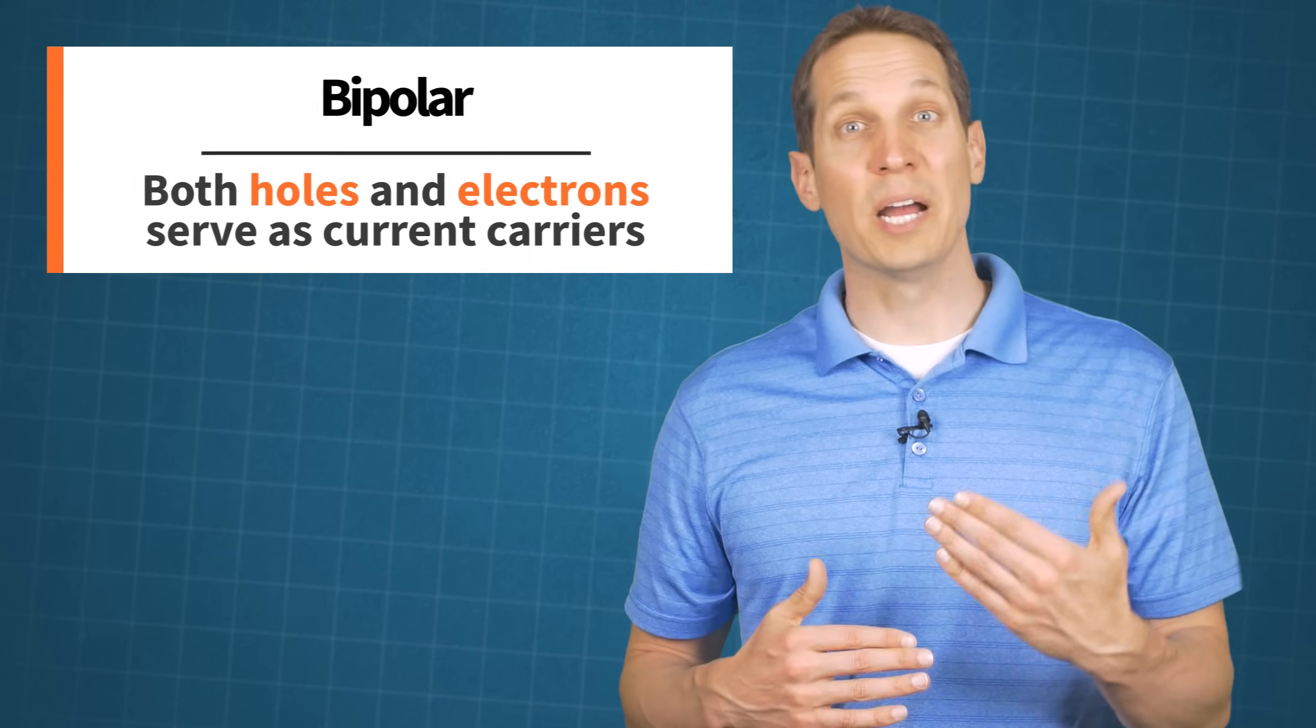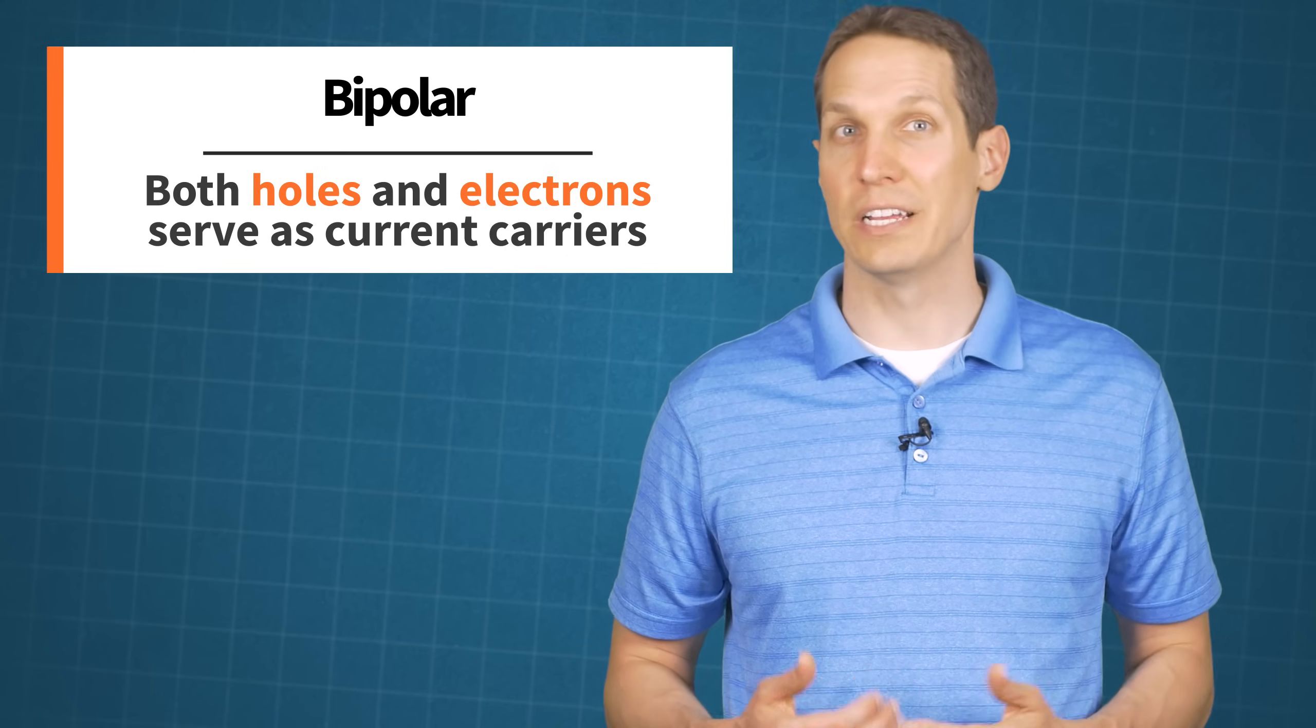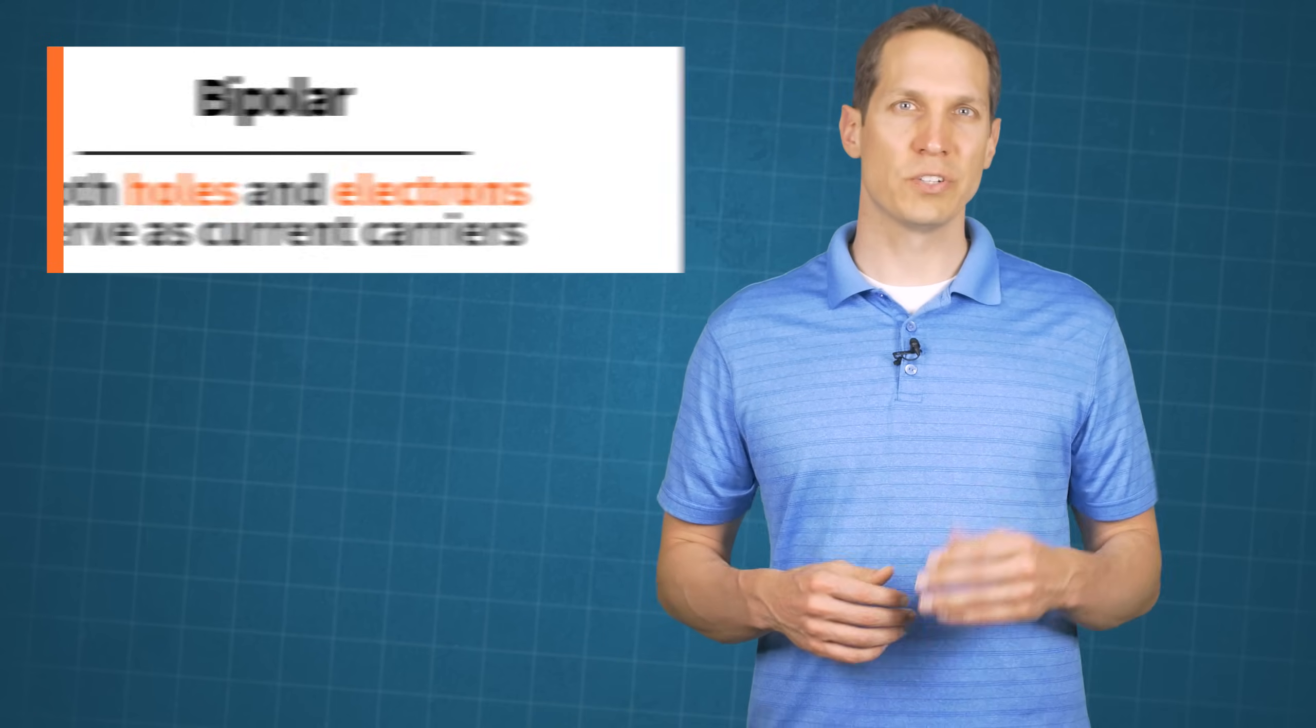There are two basic types of transistors, the bipolar junction transistor or BJT and the field effect transistor or FET. In this video, we will just focus on the bipolar junction transistor and discuss its basic structure and operation.